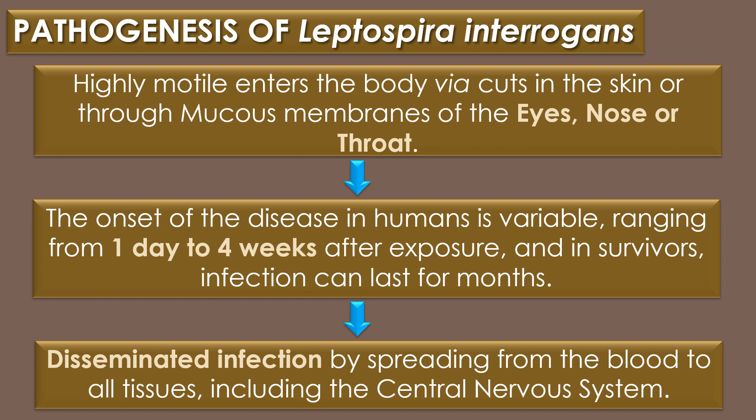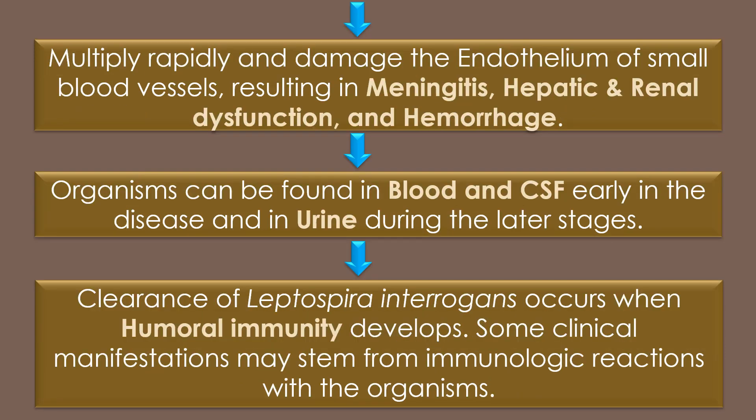Pathogenesis: The spirochete Leptospira introgons is highly motile and enters the body via cuts in the skin or through the mucous membrane of the eyes, nose, or throat. The onset of disease in humans is variable, ranging from 1 day to 4 weeks after exposure, and in survivors, infection can last for months. Leptospira introgons can show disseminated infection by spreading from the blood to all tissues, including the central nervous system. After disseminated infection, Leptospira introgons multiplies rapidly and damages the endothelium of small blood vessels, resulting in major clinical manifestations such as meningitis, hepatitis, renal dysfunction, and hemorrhage. Organisms can be found in blood and cerebrospinal fluid early in the disease, and in urine during the later stage.